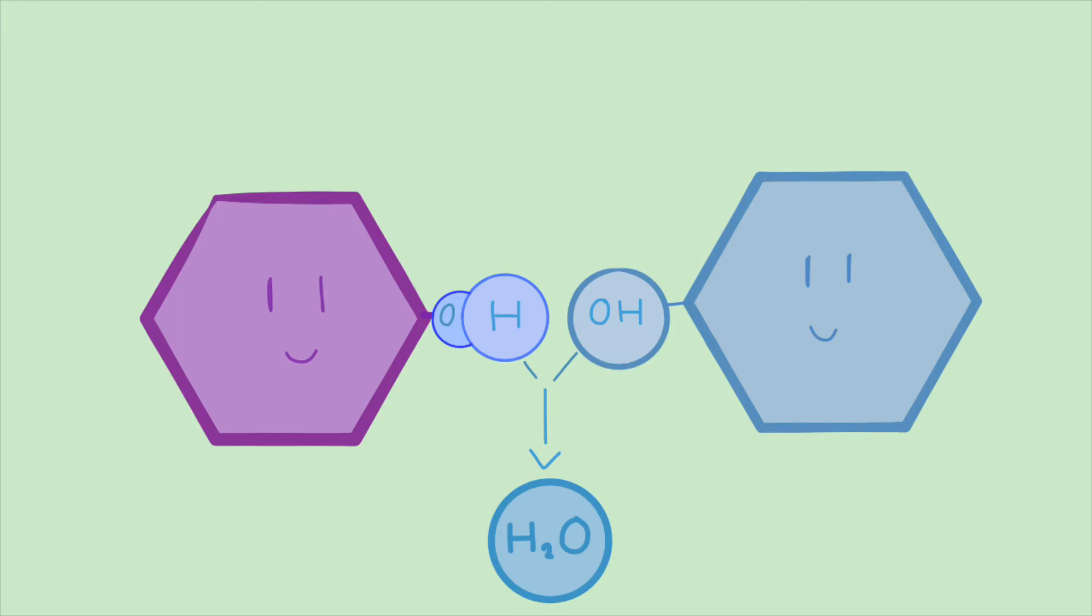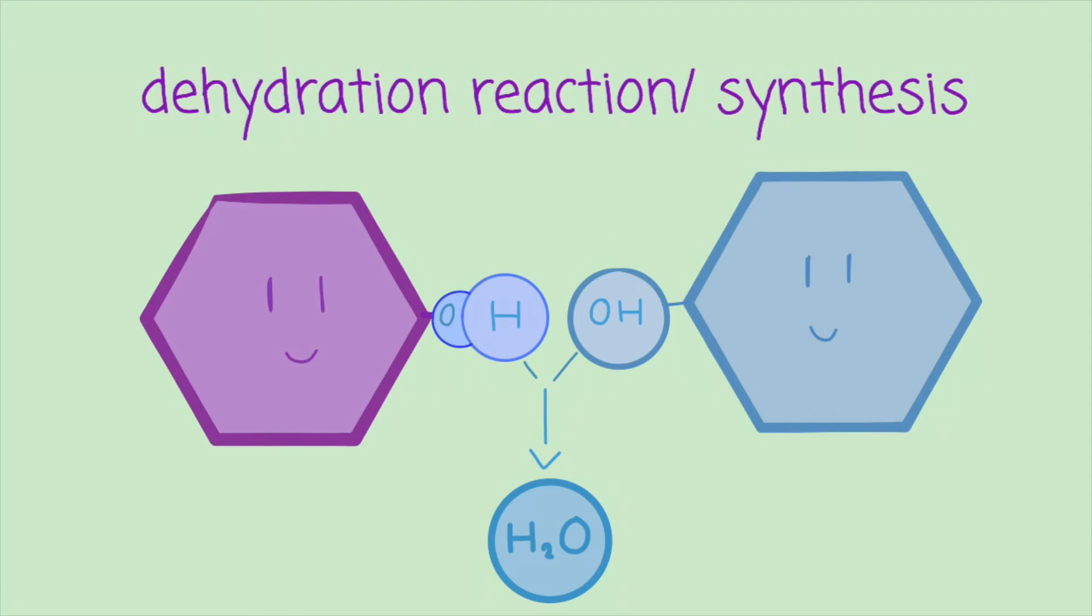What happens when two monomers come side by side is that the hydrogen of one monomer's hydroxide group bonds with another monomer's hydroxide group, forming water. Once the water is produced, the two monomers are officially covalently bonded to one another.